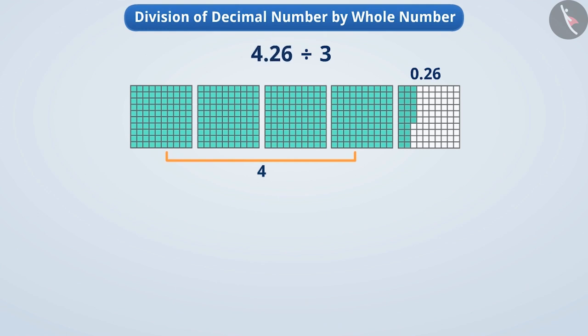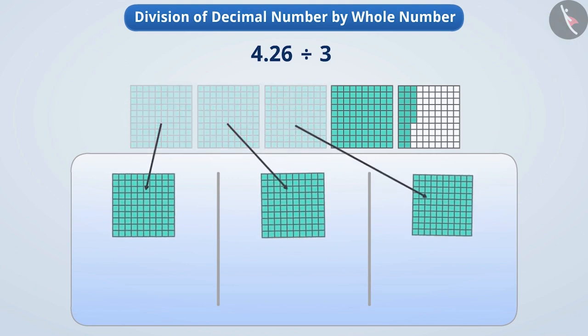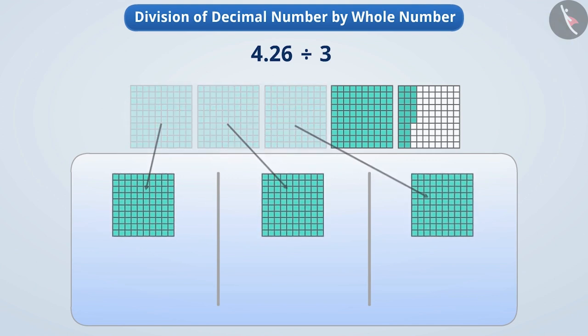Now let's divide 4.26 into three equal parts. Can you tell how we will divide 4 units into three equal parts? Think a little. Let me tell you. We can put one unit in each part. On doing so, we will be left with one unit. To divide this, we have to divide it into decimal parts.